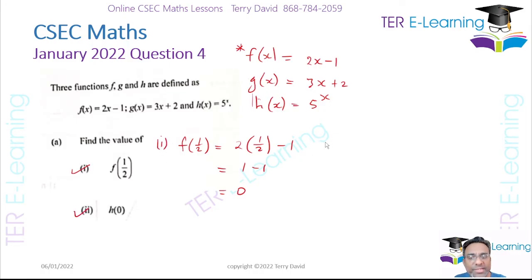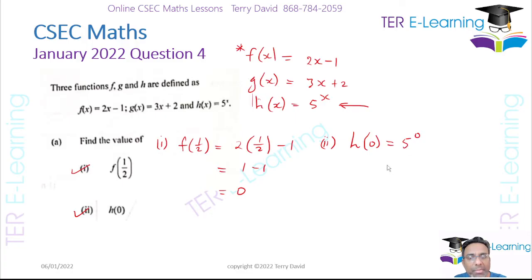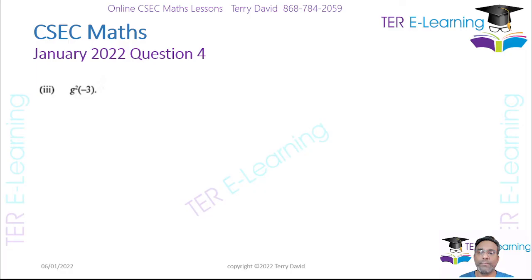Next we need to work out h(0). We take 0 and plug it into the function, giving us 5 to the power 0. Anything raised to the power 0 is 1, so the answer for part 2 is 1.